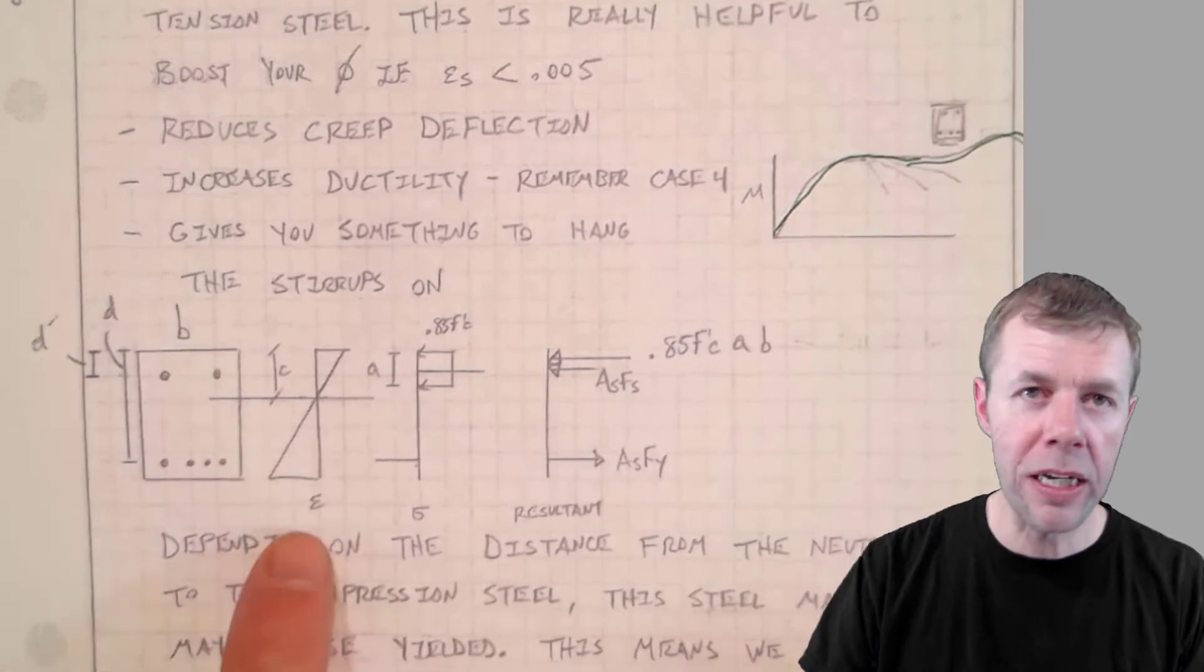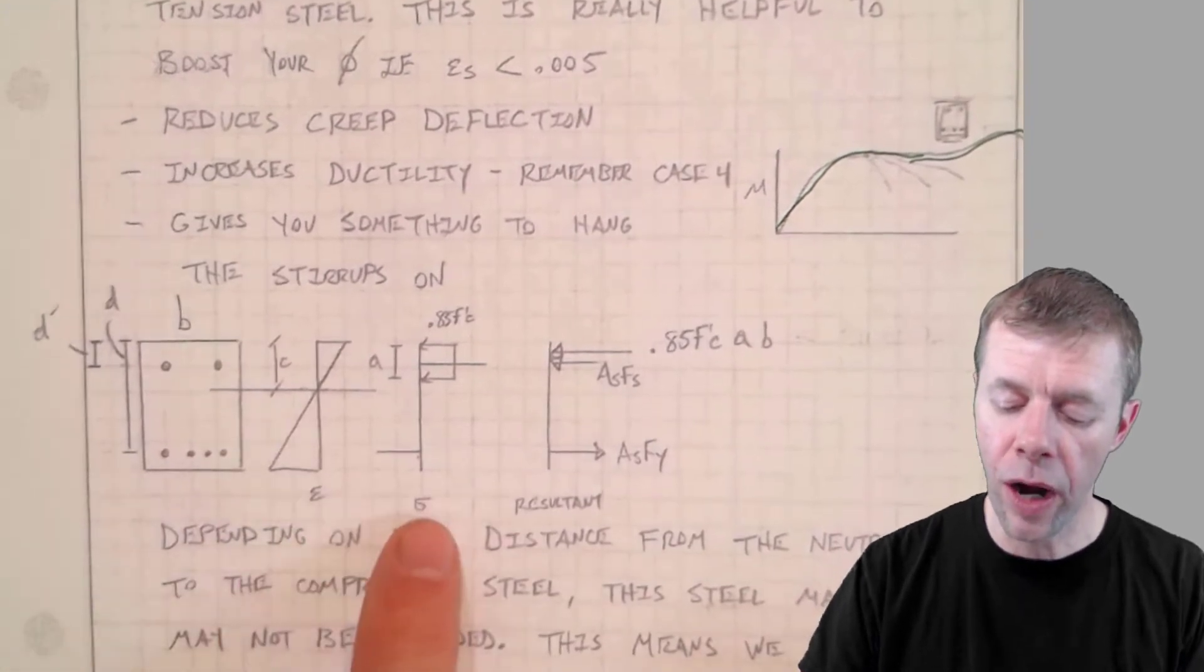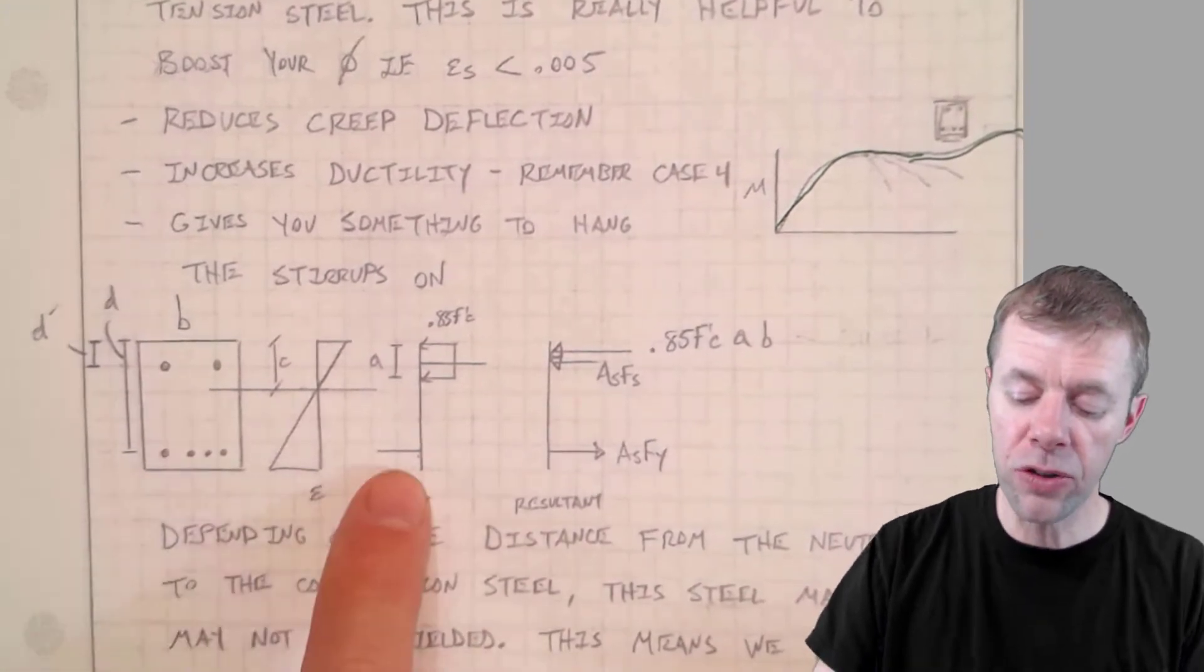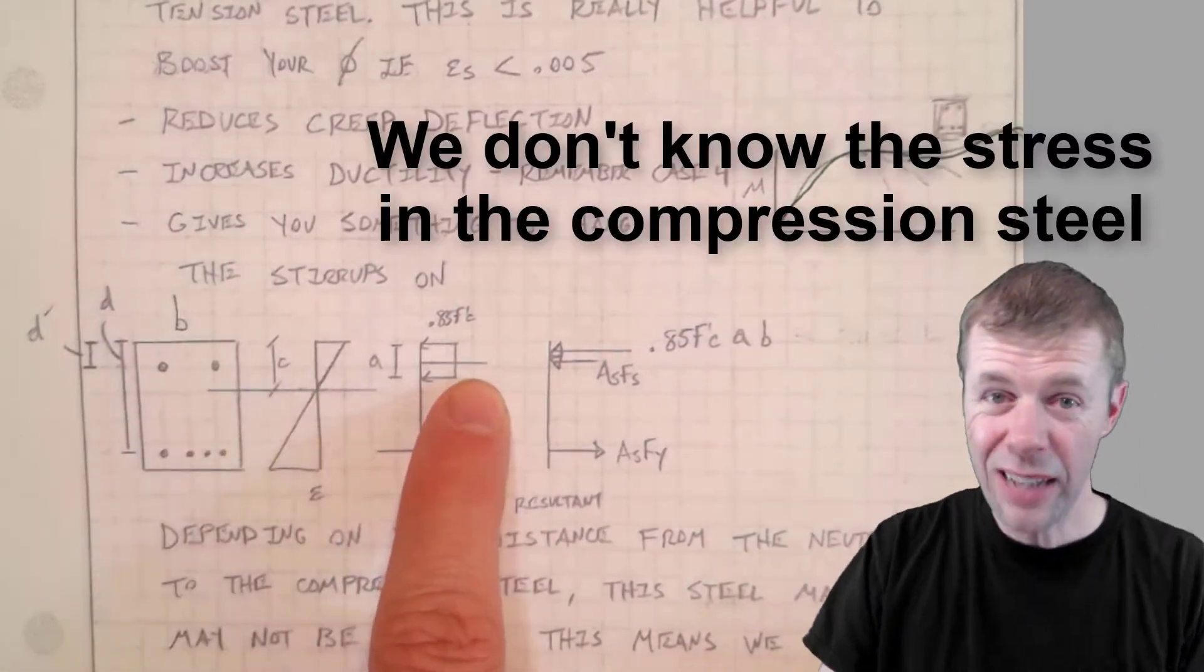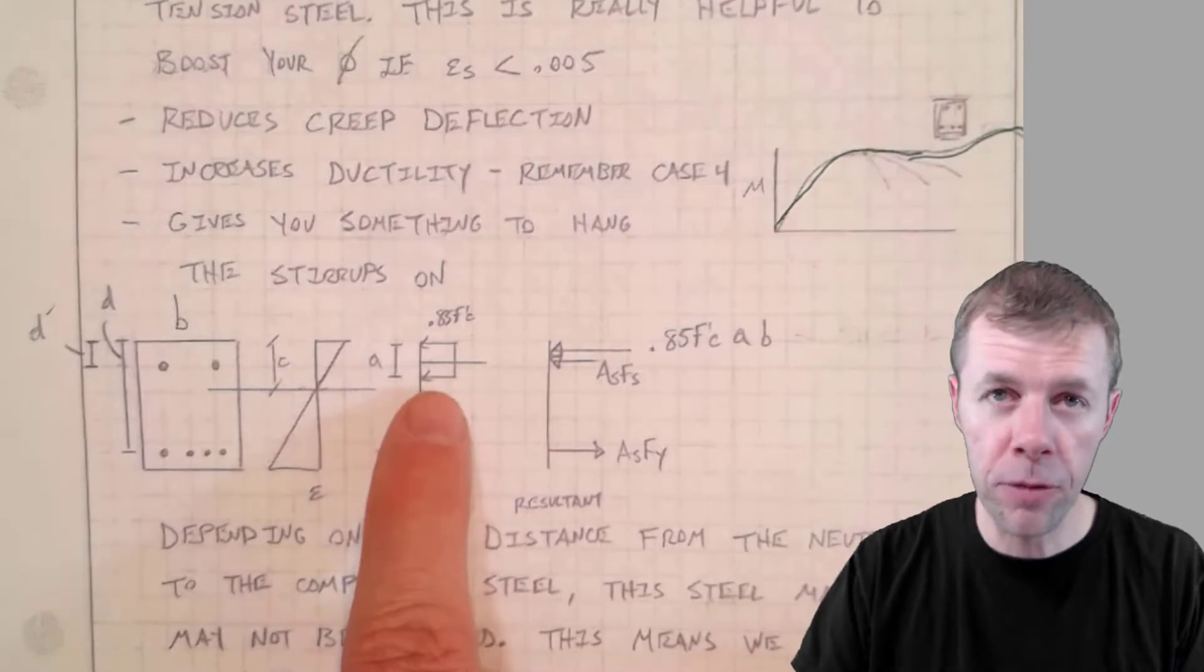In this cross section, if we look at our strain diagram, if we look at our stress diagram, our stress in the bottom in our steel, we assume it's at yield. We're going to have some steel on the top, at some other stress, and then we have a compression block. We can find these resultants.